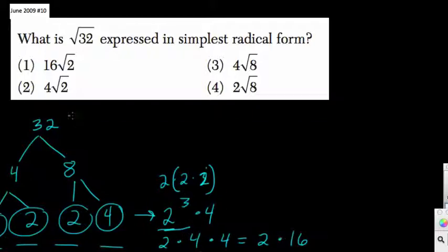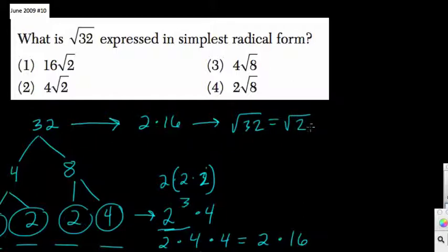And we have this now, and we're actually almost done. 32 is the same thing as 2 times 16. So that means what? Well, it means radical 32 is equal to the square root of 2 times the square root of 16. We're just breaking the number into its factors.